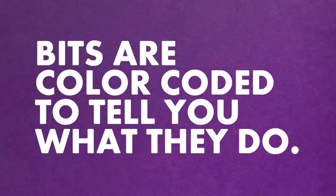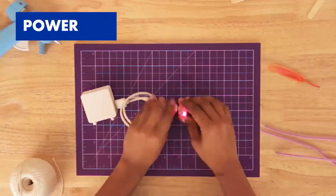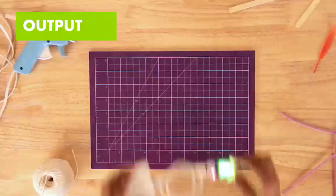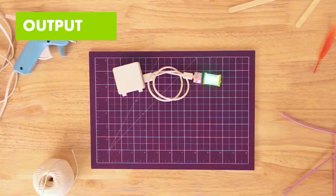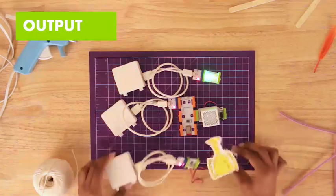You'll notice there are a few different colors of bits. That's because they're color coded to tell you what they do. Blue bits are power bits. They connect your circuits to a power source and send the signal that runs through your circuit. Green bits are outputs. They take the signal and use it to do stuff, like light up, make noise, or move.